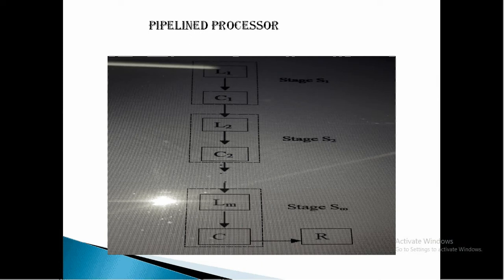A pipeline processor can be defined as a processor that consists of a sequence of processing circuits called segments, and a stream of operands — i.e., data — is passed through the pipeline. In each segment, partial processing of the data stream is performed, and the final output is received when the stream has passed through the whole pipeline.